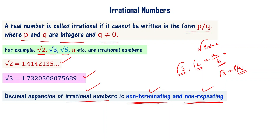So the assumption that root 2 or root 3 is a rational number turns out to be wrong. Since the assumption is wrong, root 2 or root 3 is not a rational number — therefore it is an irrational number. That is the idea of proof by contradiction.